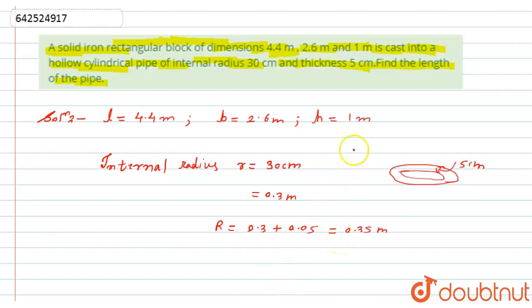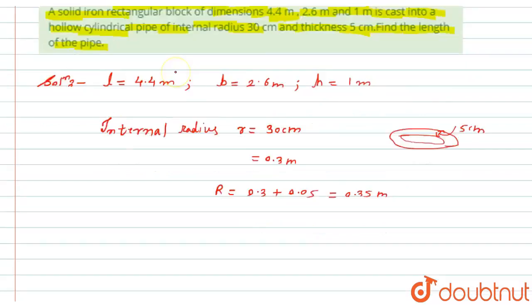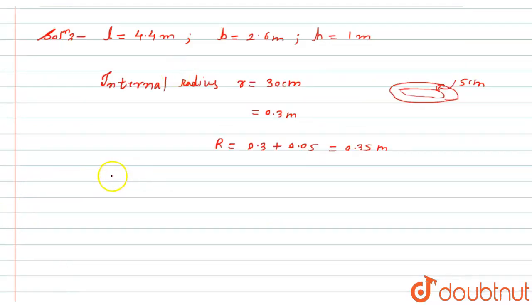Now, what is asked to find? It is asked to find the length of the pipe. So here, let the length of the cylindrical pipe be capital H.